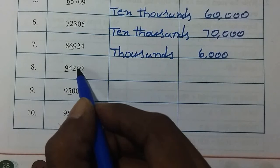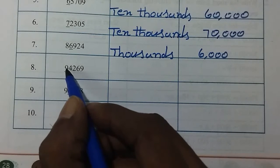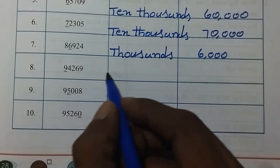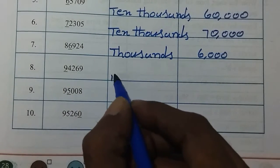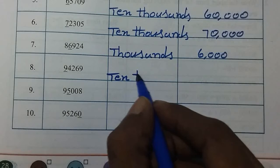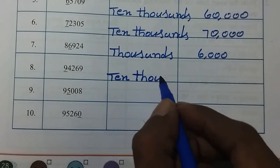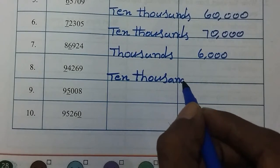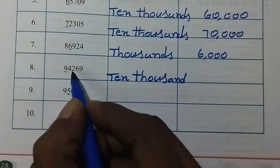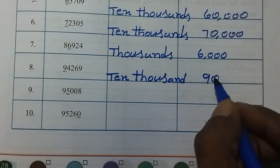This is the 1s, 10s, 100s, 1s, 10s — this is the 10,000s to the left. So 9,000s to 90,000s to the left.